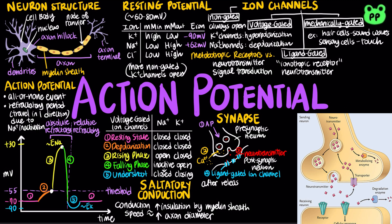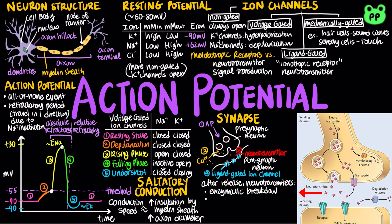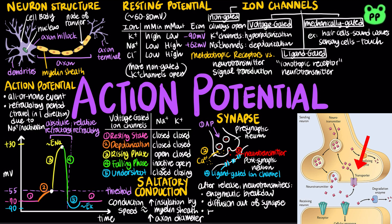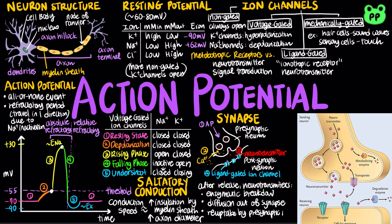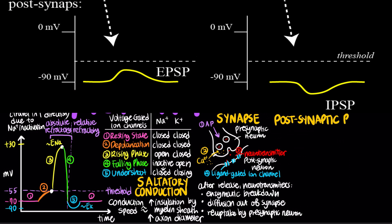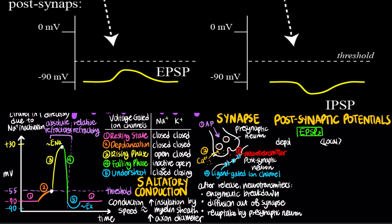After release, neurotransmitters may undergo enzymatic breakdown, they may diffuse out of the synapse, or be reabsorbed by the presynaptic neuron. Neurotransmitter binding causes ligand-gated ion channels to open, generating a postsynaptic potential. Postsynaptic potentials fall into two categories. Excitatory postsynaptic potentials, or EPSPs, are depolarizations that bring the membrane potential towards the threshold, usually by the activation of ligand-gated sodium channels.